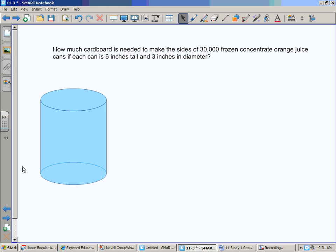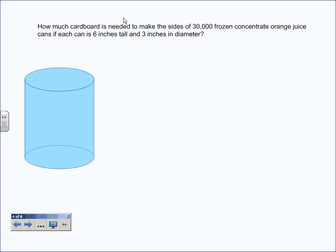We're going to get this one at least set up and then I will have you work on it for a little bit. How much cardboard is needed to make the sides of 30,000 frozen concentrate orange juice cans? They're about this big and they're rock solid when you take them out of the freezer and they have the concentrate in it and then you unravel it. It says each can is six inches tall and three inches in diameter and this is a replica of the can here. So we know it's six inches tall so we'll put that right here and we know that three inches in diameter and remember diameter does mean all the way across. So are we going to use the right prism formula or the right cylinder formula? Right cylinder. Right in this case means it went straight up, which it does.